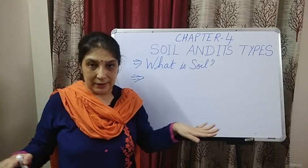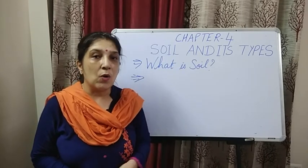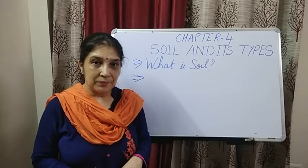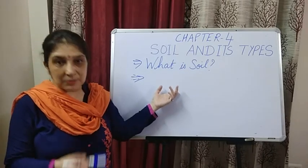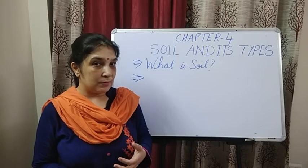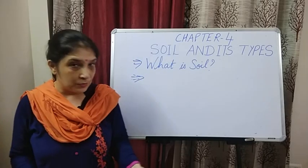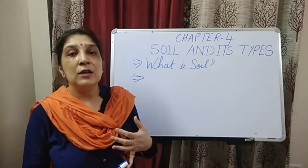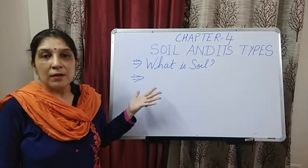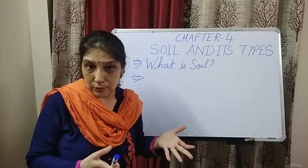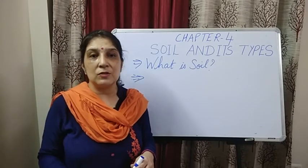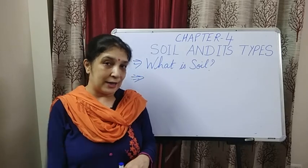Children, the topmost layer of the earth on which the plants grow is called soil. It is impossible for the plants to grow without soil. Soil supports the plants, helps them grow, and also provides air, water, and minerals. Just like you need calcium and protein from different food sources, plants get their food — air, water, and minerals — from the soil. Minerals are natural resources present in the soil which help the plant become stronger.